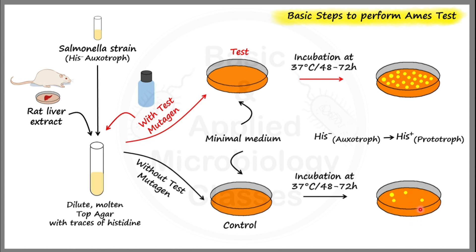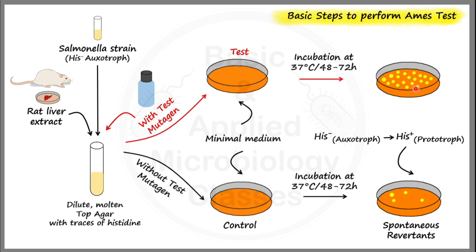In the control plate, we can observe some colonies. Even without a mutagenic agent, some bacteria have regained their ability to produce histidine. This is because spontaneous mutations also occur in bacterial cells — these are called spontaneous or natural revertants. On the test plate, where the histidine auxotrophic strain was treated with the test mutagen, we observe more colonies, called induced revertants. The more the number of colonies, the more the histidine prototrophs, which means a higher rate of mutation reversion and a more powerful mutagenic agent.